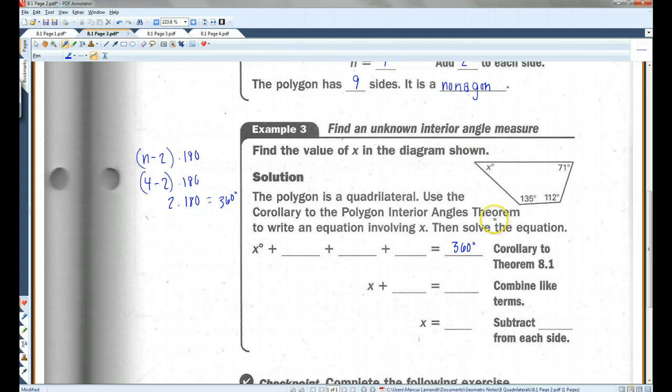If you just remember, any quadrilateral, they add up to 360, you're good. So if I add up all 4 of these angles, I'm going to get 360. So x degrees plus 71 degrees plus 135 degrees plus 112 degrees equals 360. Now I just need to solve for x. If I add all 3 of these together, let's see here.